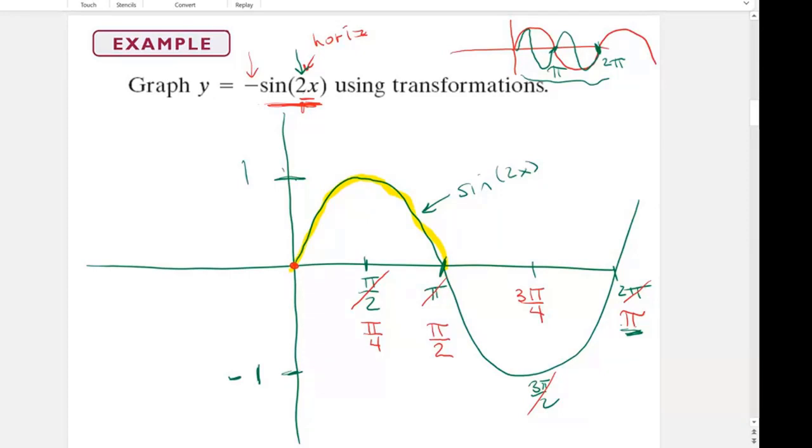what should happen is they all should become negative. It's actually flipping over the x-axis. This now is negative sine of 2x. And it flipped over the x-axis.